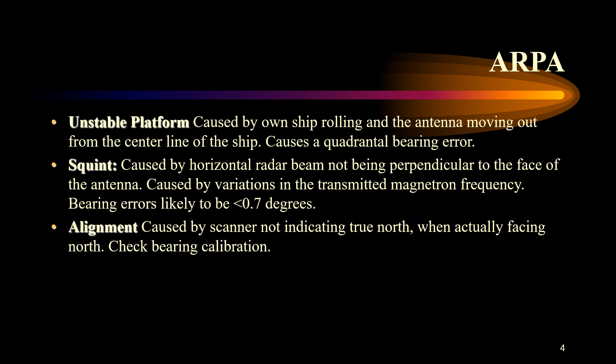Then we have the unstable platform, which is caused by the own ship rolling and the antenna moving out from the centerline of the ship, which can further cause a quadrantal bearing error. The bearing error can become four times that of the minimum error normally experienced.